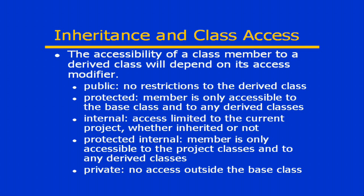Now to illustrate this, let's go back and remind ourselves of some of the accessibility options that are available for members of a class. Remember that we have public accessibility, and that means that there are really no restrictions at all. So in our Poodle class, as an example, Poodle would be able to access any of the public methods of the base class.